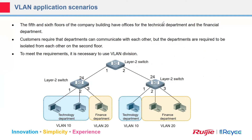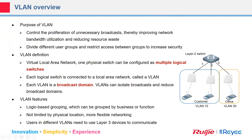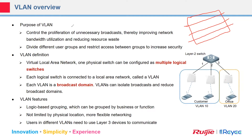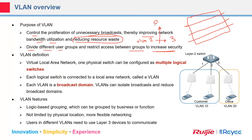The NBS series supports 802.3af and 802.3bt. The purpose of VLAN is segmentation — you are segmenting your environment. If you have different floors, you are segmenting your network. VLAN controls the proliferation of unnecessary broadcasts, improving network bandwidth utilization and reducing resource waste. It divides different user groups and restricts access between groups to increase security, so people in VLAN 2 cannot talk with people in VLAN 3 unless there is routing between those VLANs.